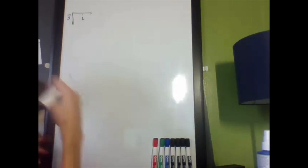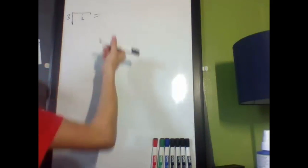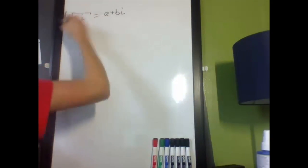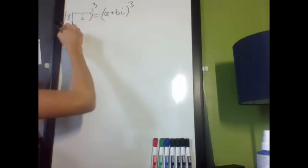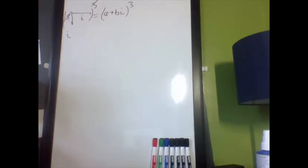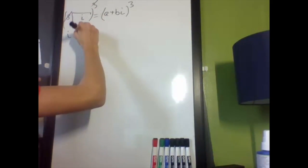First, using the horrible way you should never do, and then second, using the way you should always do. So let's set this equal to some generic complex number a plus bi. Then, cube both sides, and I get i on this side because the cubed root and the cubed cancel each other out.